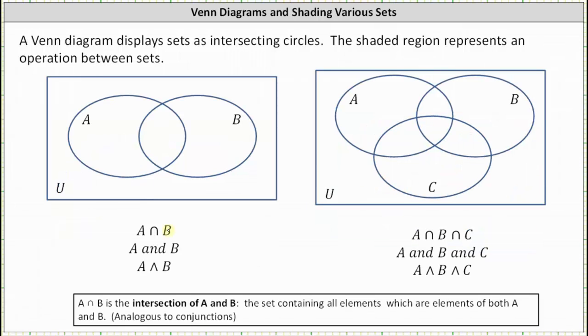First, let's take a look at the intersection of A and B, or just A intersect B, which we can also read as just A and B. A intersect B is the set containing all the elements which are elements of both A and B.